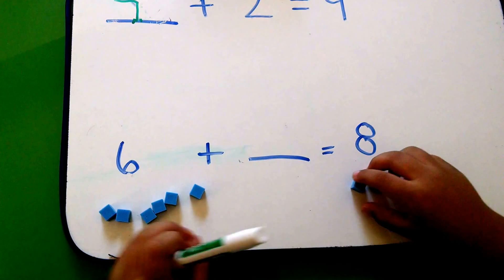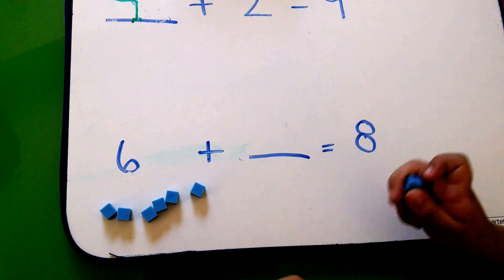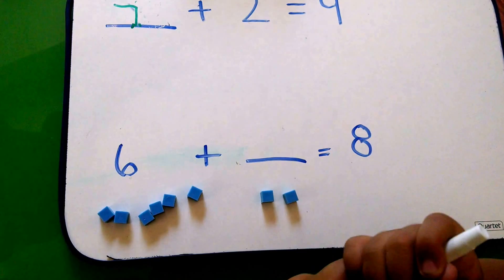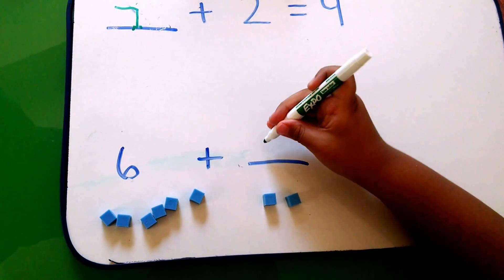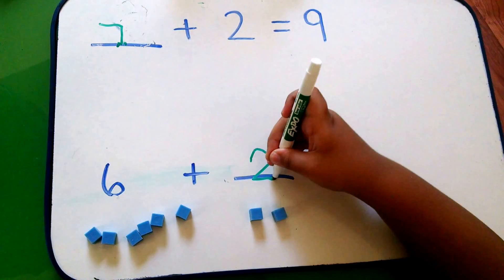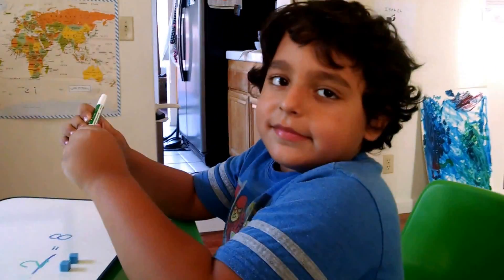Six blocks here. Now you put the rest of the blocks here and it's going to be two. Okay, one.